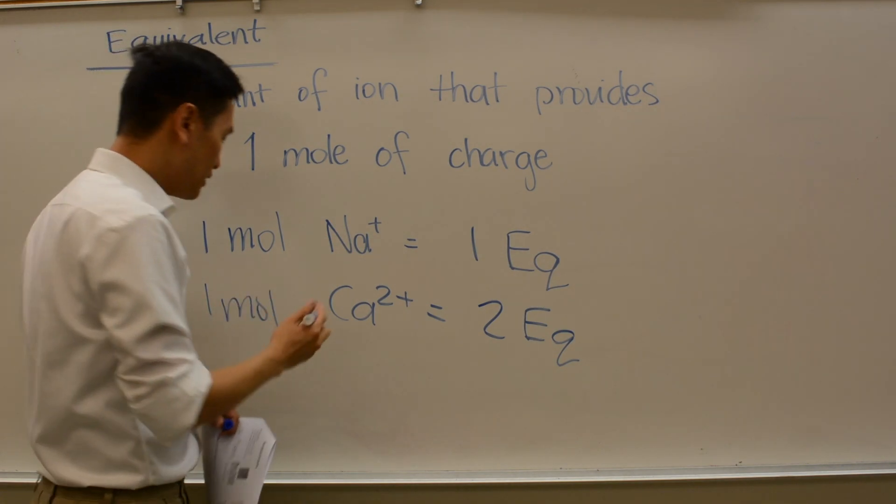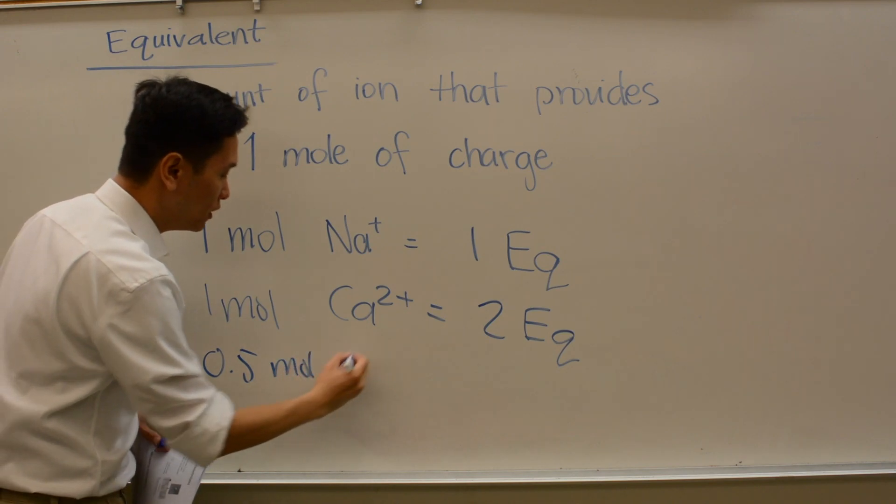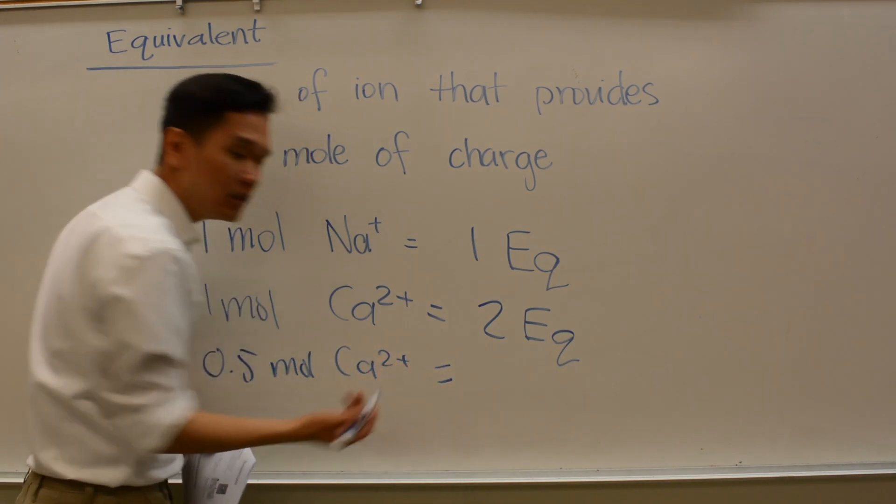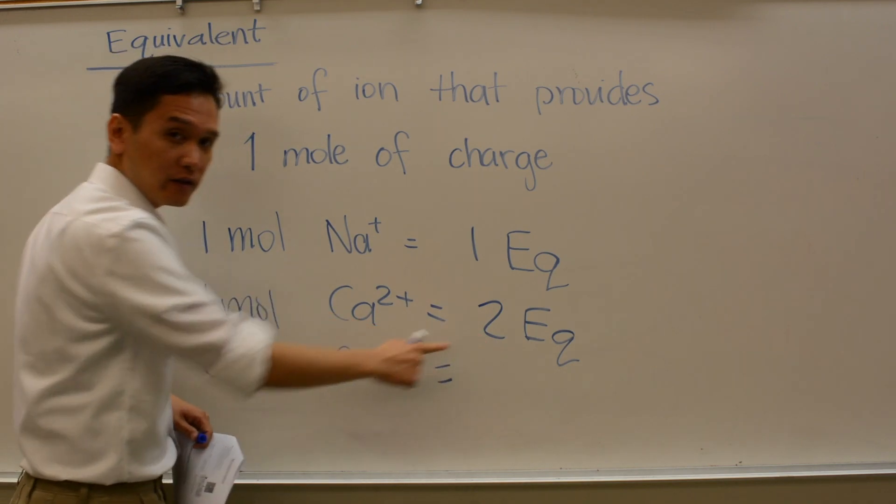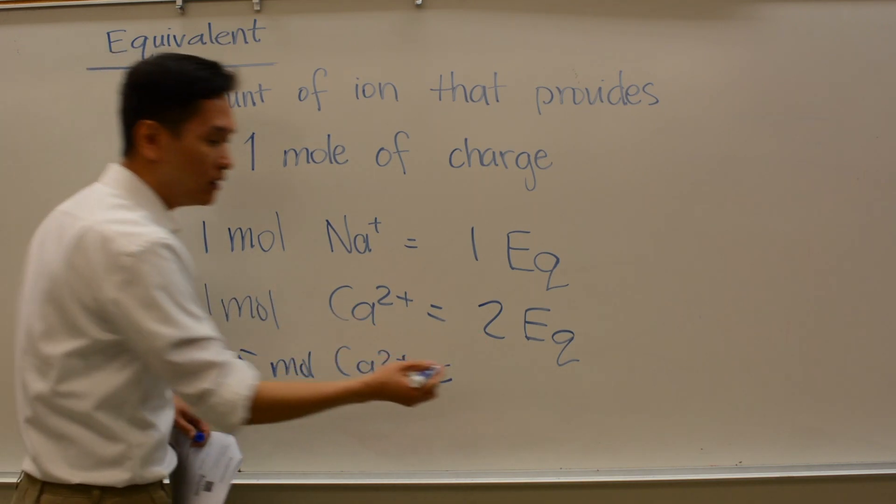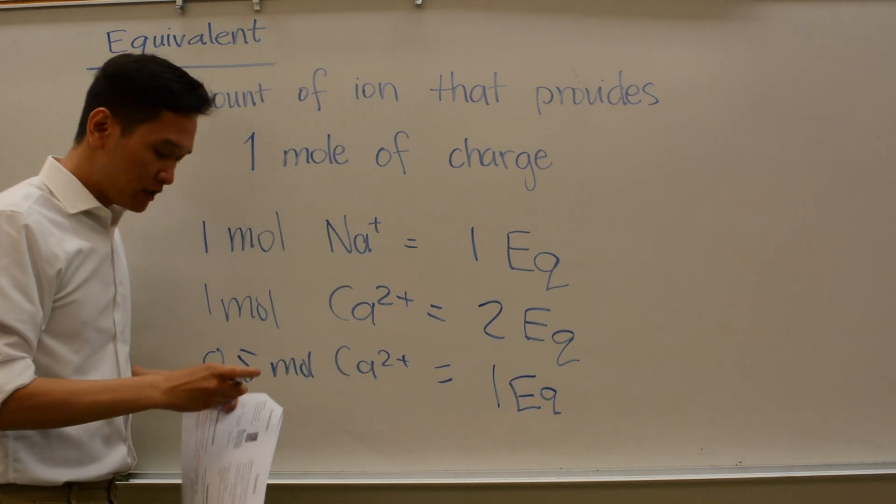So again, if I had 0.5 mole of calcium 2+, how many equivalents is that? Since one mole gives me two equivalents, half a mole will give me one equivalent, right?